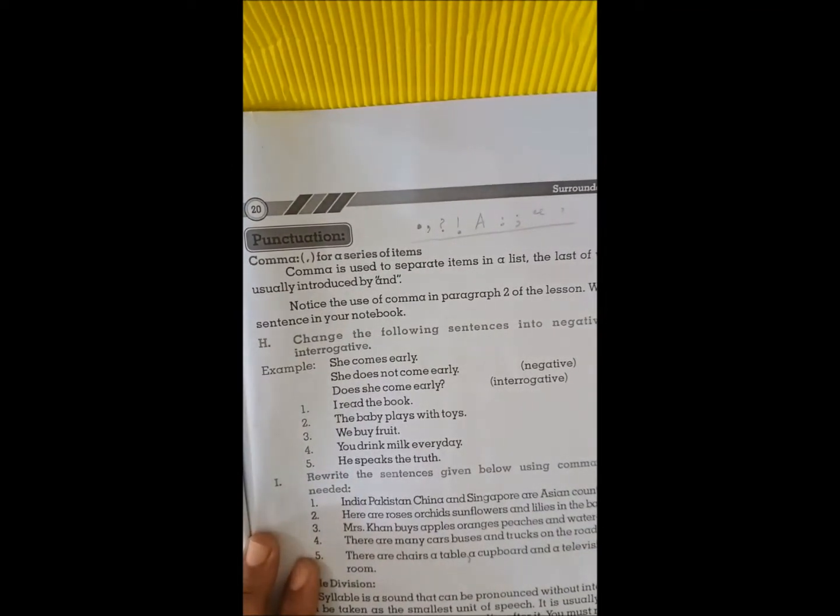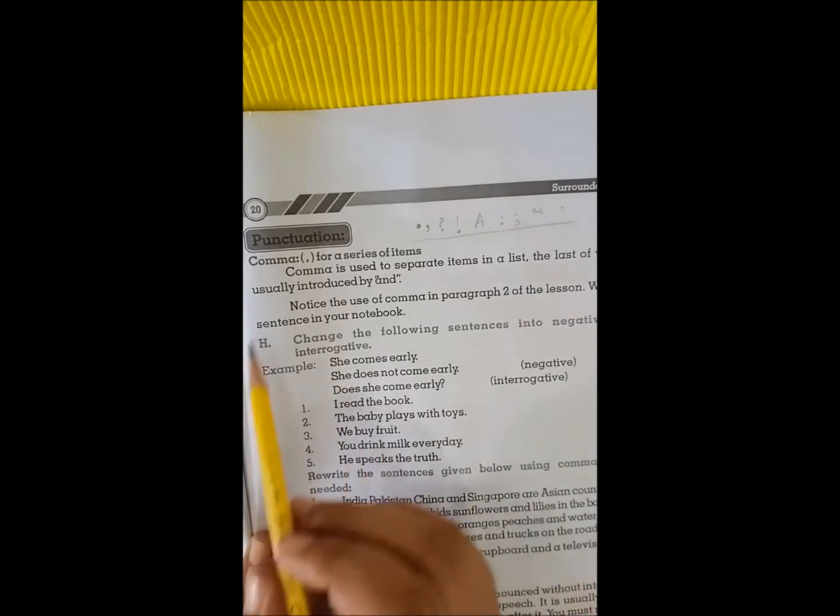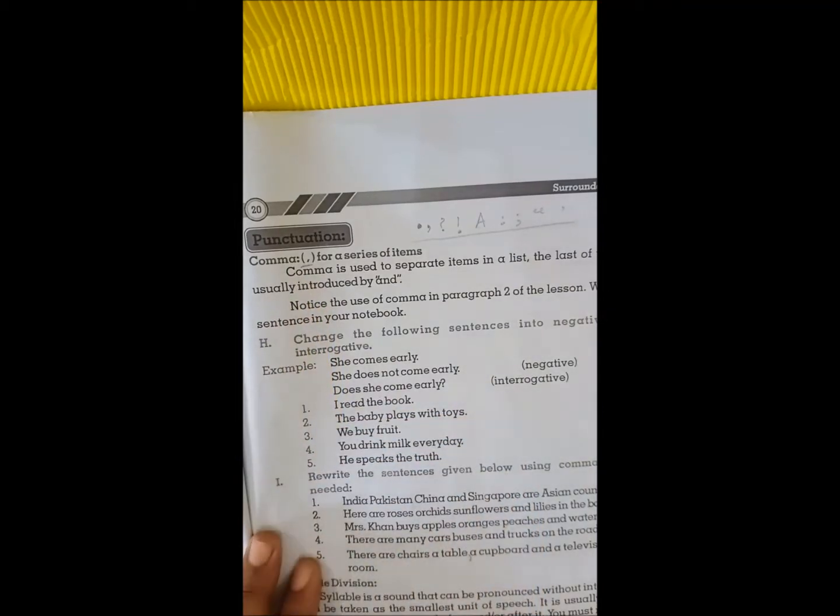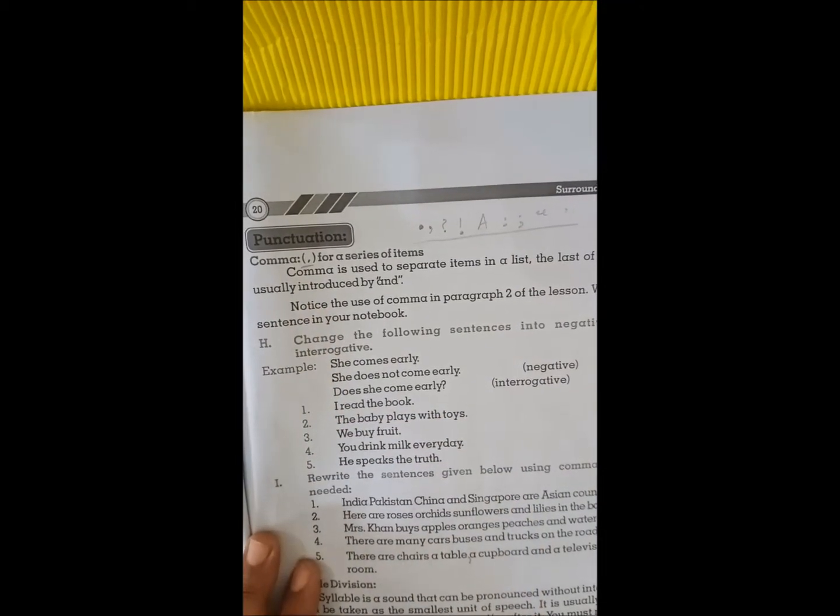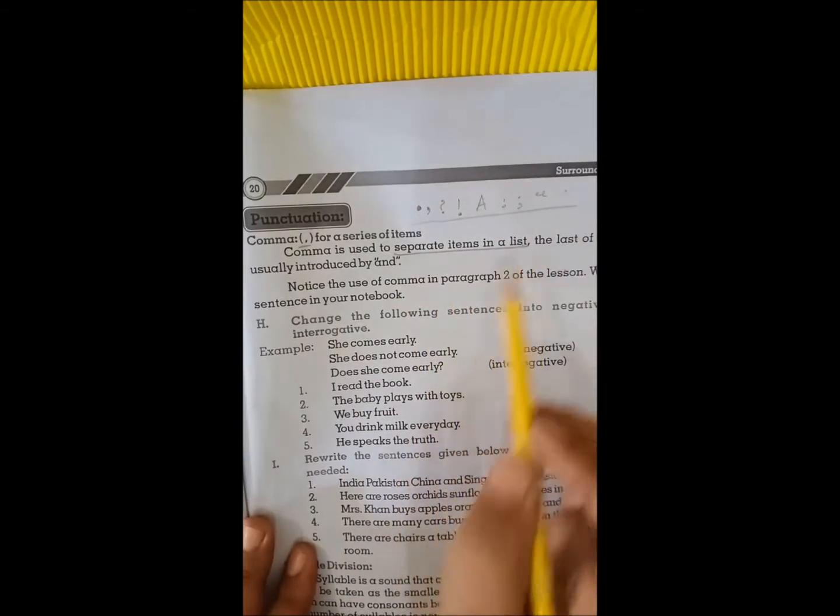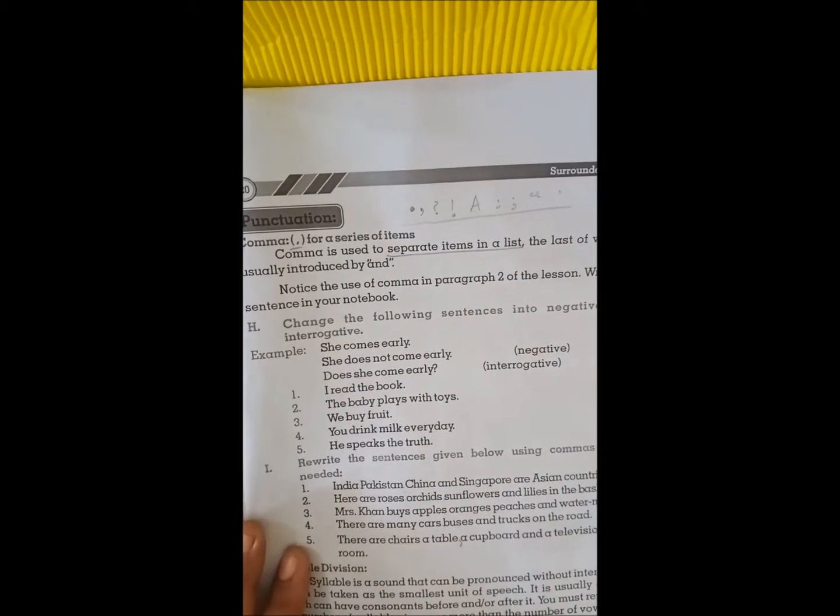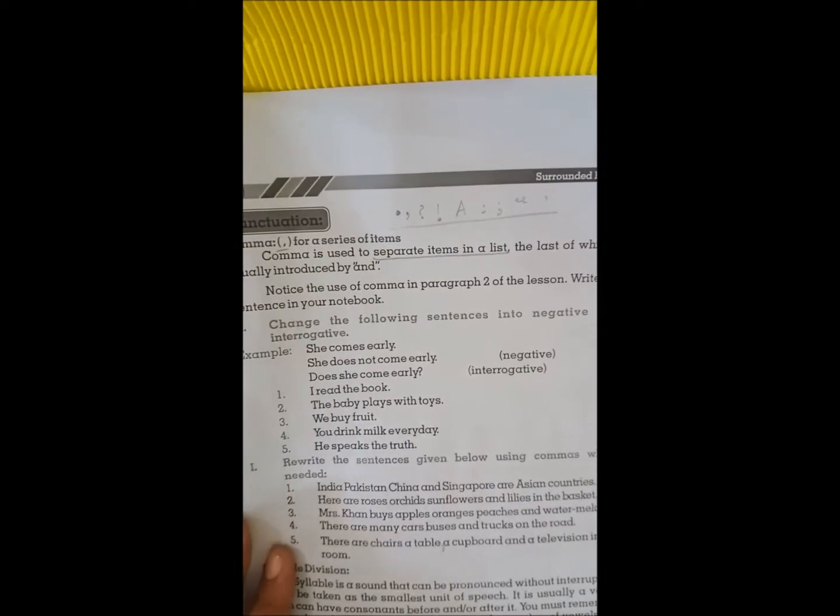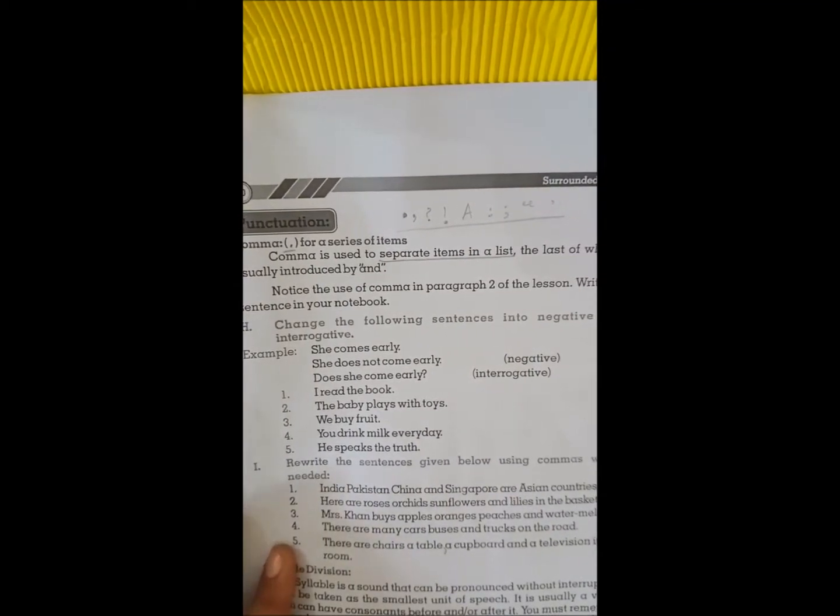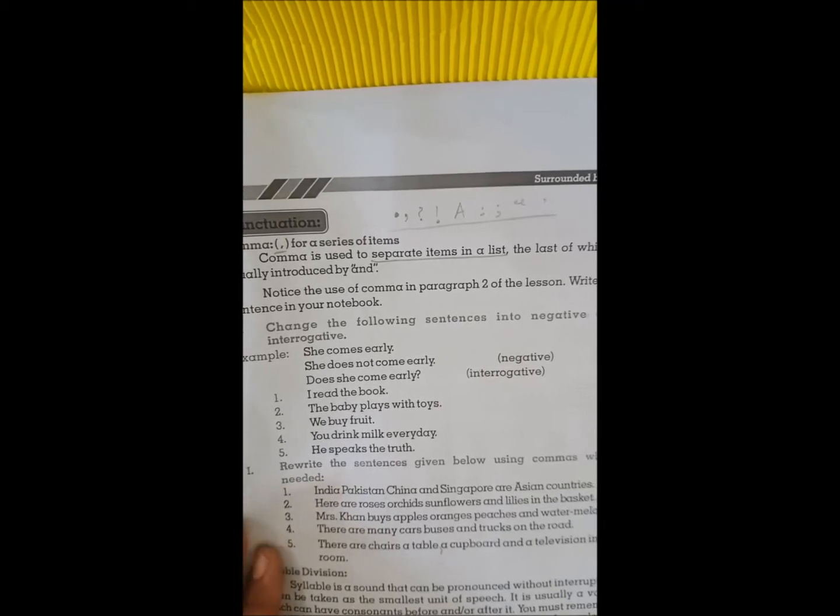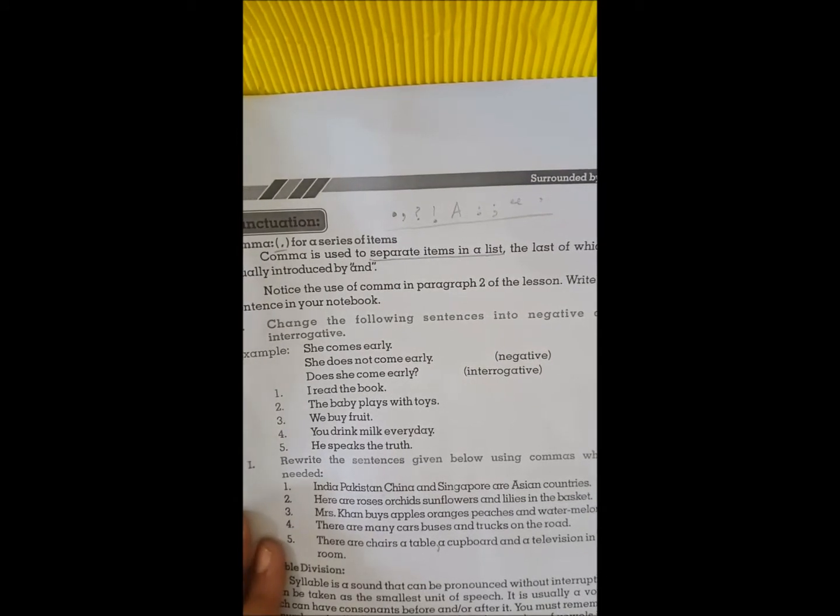That are called punctuation marks. Now we are going to read about comma for a series of items. Where we use comma? Comma is used to separate items in a list. In a list there are many items, so we will use comma, and the last one will be 'and'.